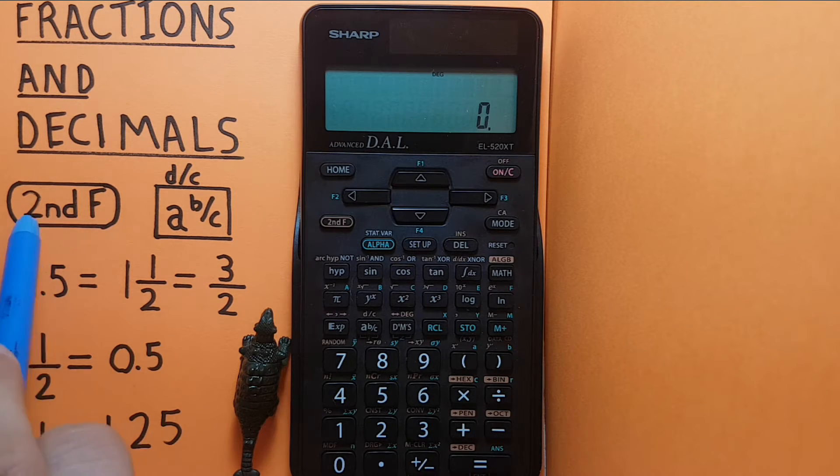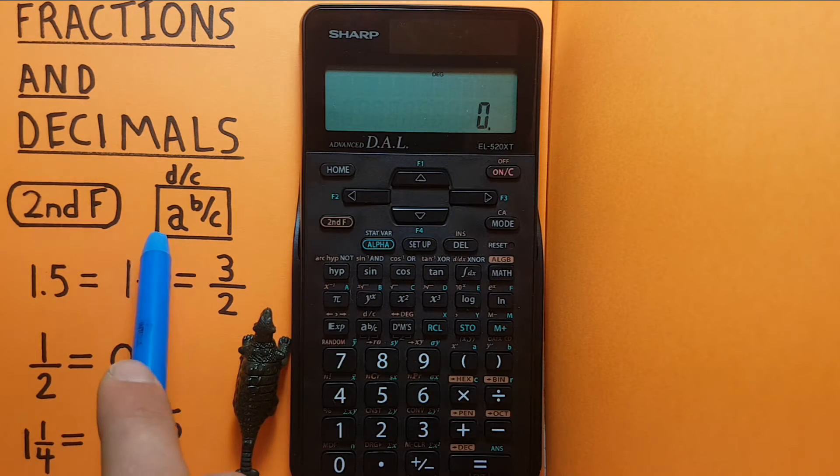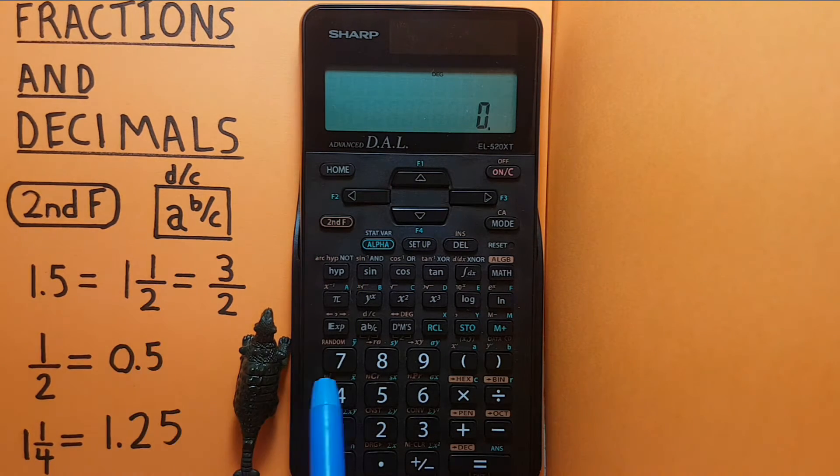To do this we'll be using the second function key located here and the a b over c key located here.